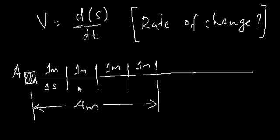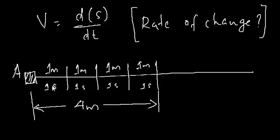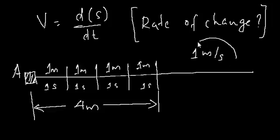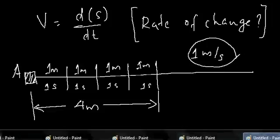As you can see on the figure, in each second you cover one meter. In the first second it was one meter total, in the next second you are two meters from the origin, then three meters, and so on. The rate of change of distance in unit time is one meter per second. So the velocity in this case is one meter per second.